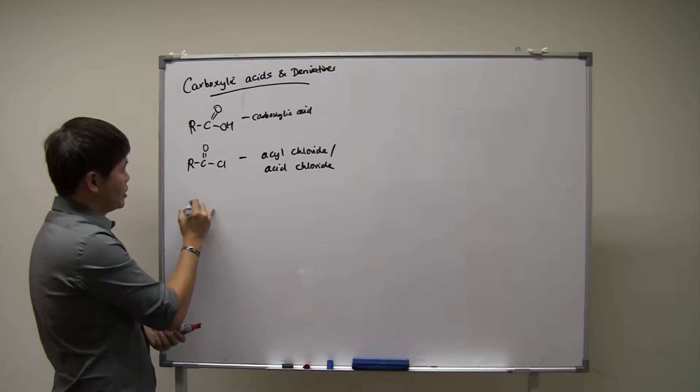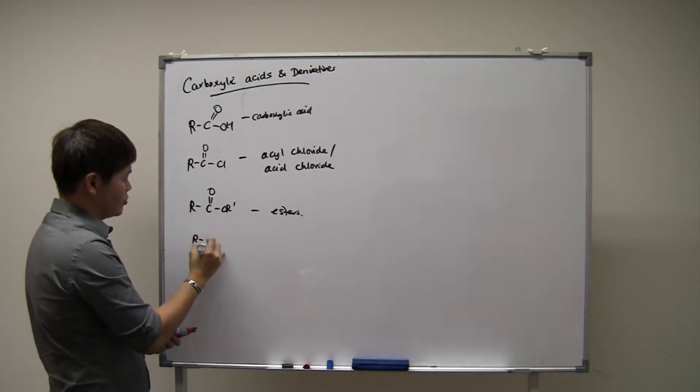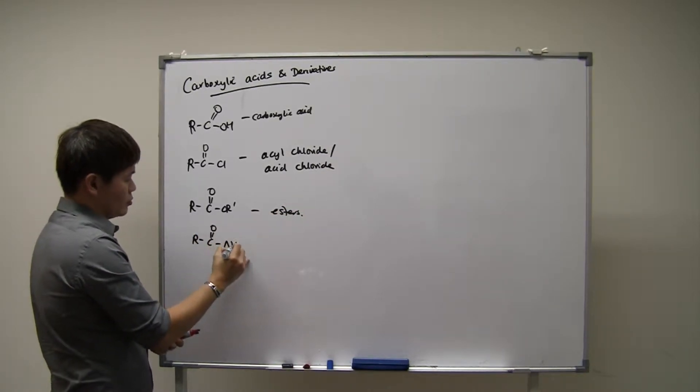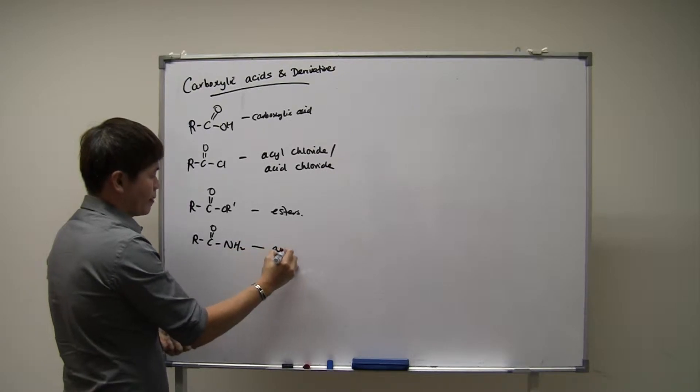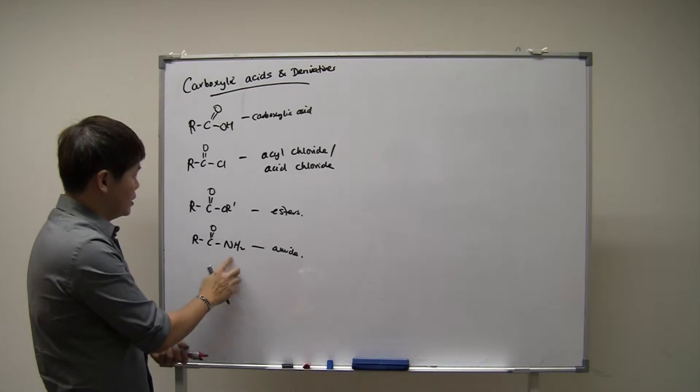And then other derivatives that we learn of in school are esters. And then there's another derivative which is called the amides. Of course, the amides can have two H's or one R, one H or two R's. They're all amides.